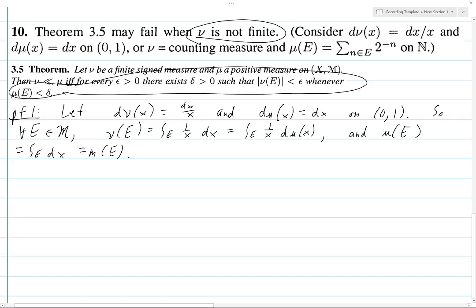there is no delta greater than 0, such that if μ(E) is less than delta, then the absolute value of ν(E) is less than epsilon. We don't want this being less than delta to imply this being less than epsilon. So, let's go through this.